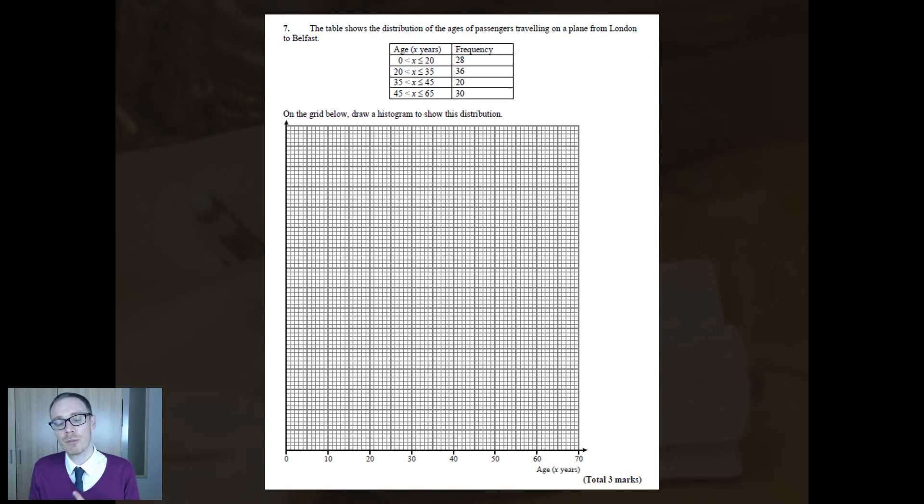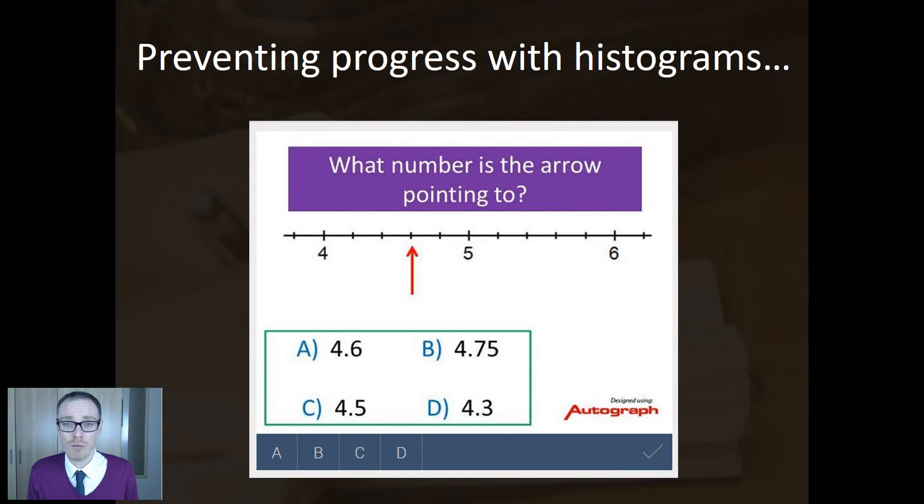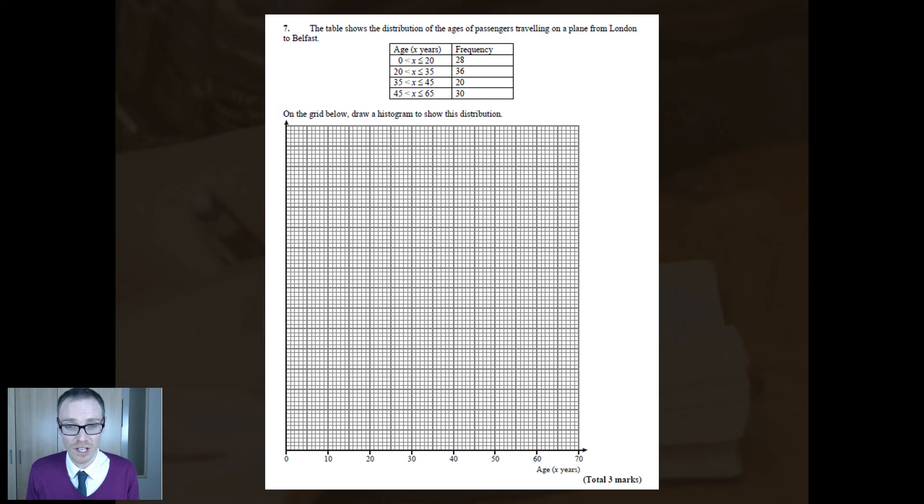Everyone happy. Projected the answer up. Everyone got it right apart from three kids. Now, whenever I looked at those kids' answers, it wasn't that they couldn't do histograms. What had they messed up? They messed up plotting the scale on the frequency density on the y-axis. They got that bit wrong. But of course, in the kids' heads, those three kids, we can't do histograms. We're rubbish at histograms. We've failed again.